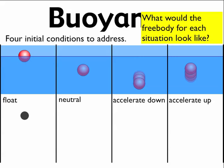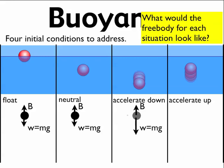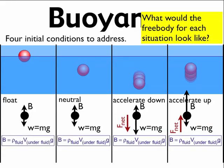In terms of free-body diagrams: if it's just floating, you have mg downward equal to the buoyancy force upward. If it's neutral in the water, the free-body diagram is the same. If it's accelerating down, the weight is greater, so there's a net force going down. If it's accelerating upward, the net force goes up. Remember, the direction of F-net defines the positive direction — if F-net goes down, mg is positive; if F-net goes up, the buoyant force is positive.